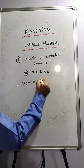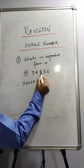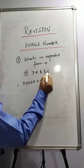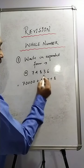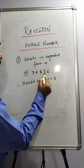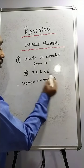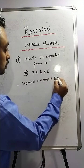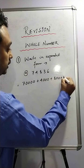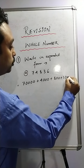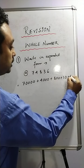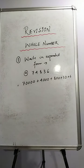Now you write 4, and then count how many digits are there after 4 — that is 1, 2, 3 — so you put 3 zeros. The same thing you do with 8: write 8 and count how many digits are after 8 — 1, 2 — so 2 zeros. Then write 3 with 1 zero, and then 6. This is exactly how you expand any number given in the question paper.